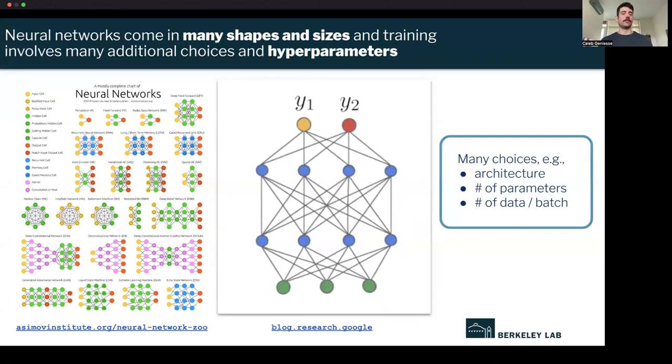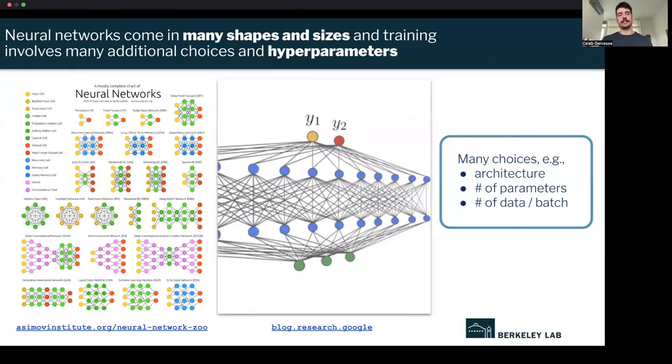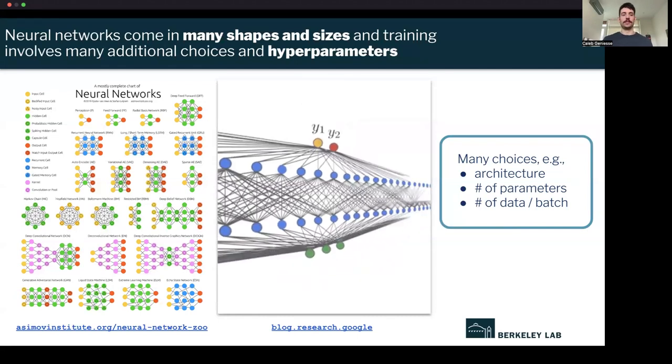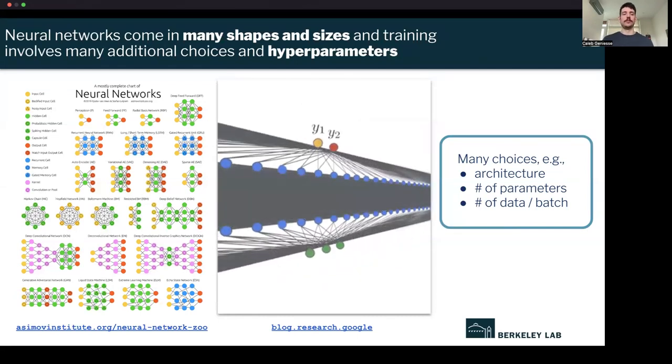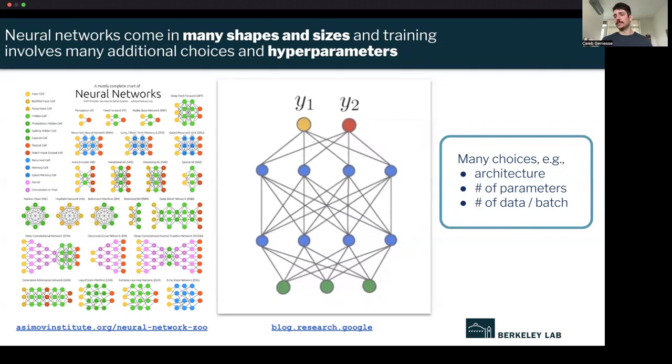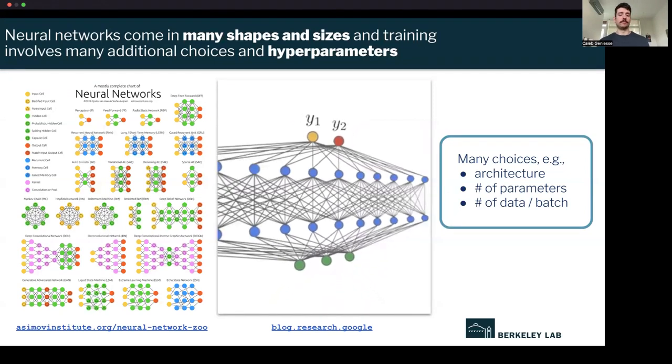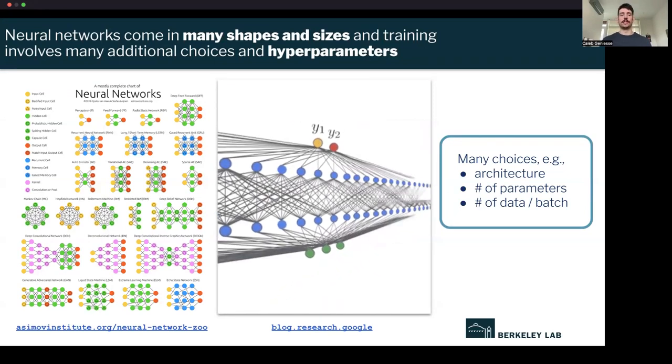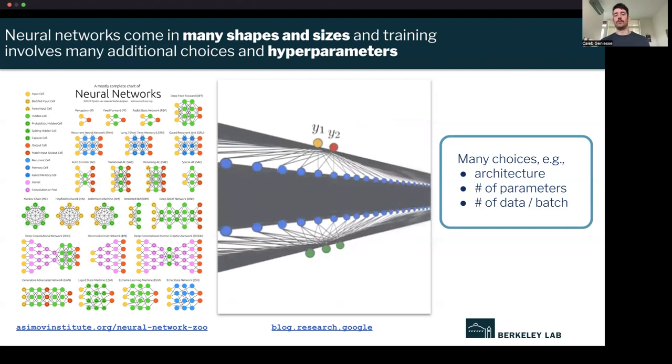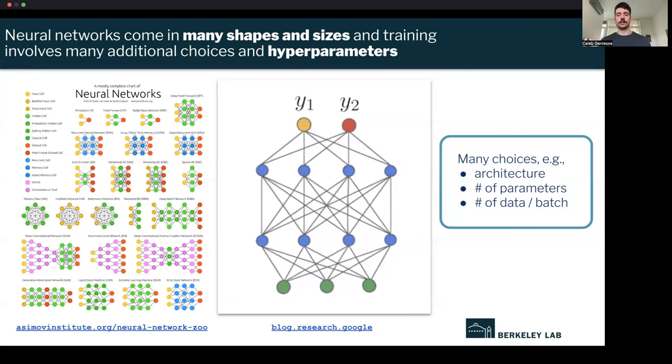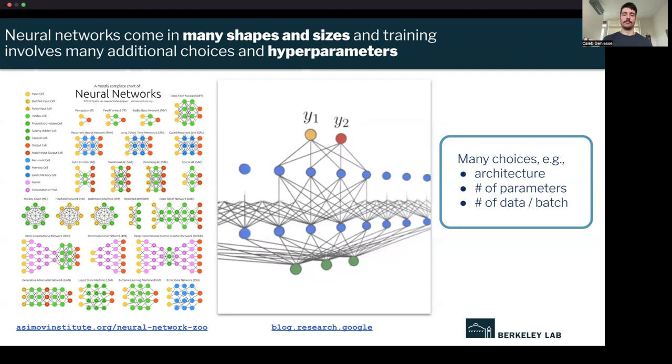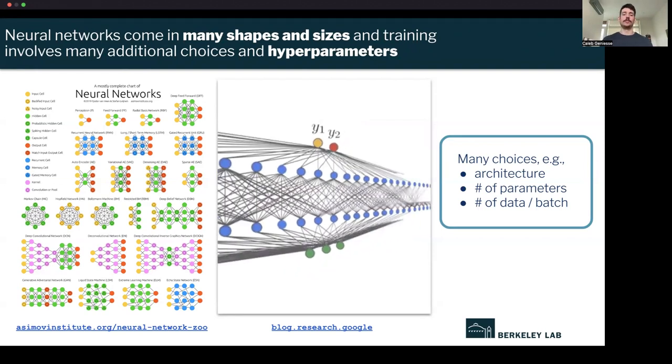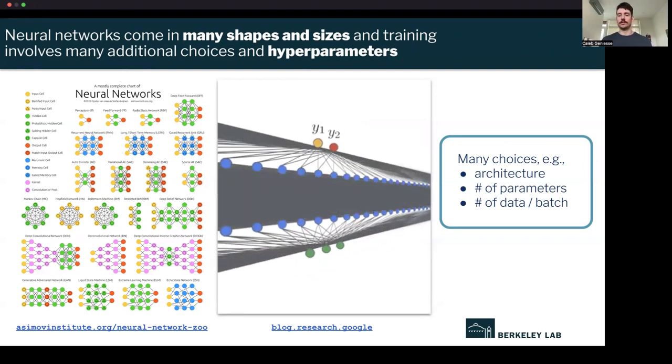Once you've decided to use a neural network for your project, there are still many decisions that need to be made, and this can often be difficult. So first you need to choose a neural network architecture. Often this can be determined based on the type of data you're using, whether it's images or time series data. And once you decide on the neural network architecture, you have to decide how many parameters you want to include. Here I'm showing the increasing width of a neural network.